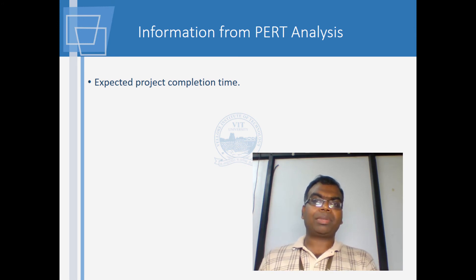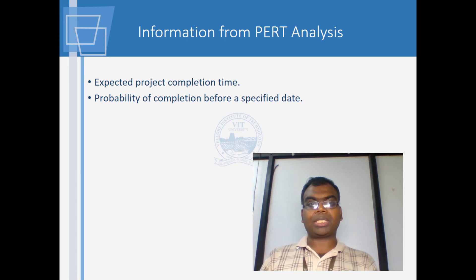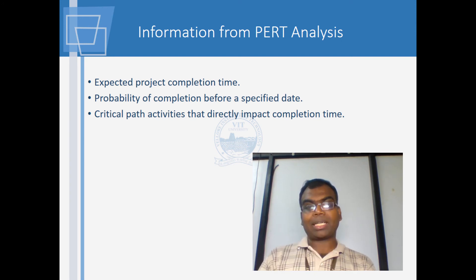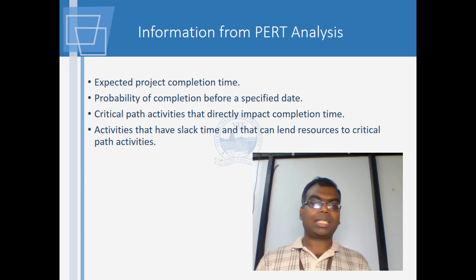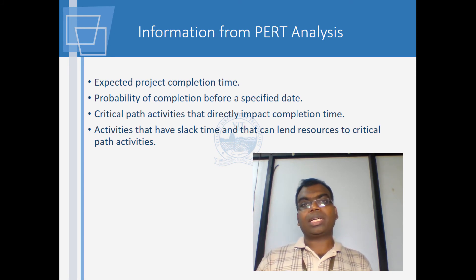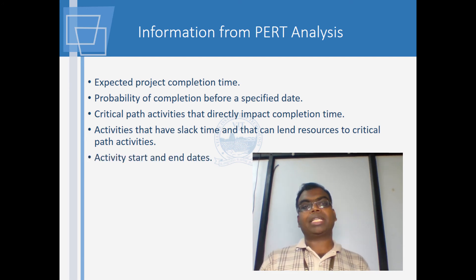From PERT analysis we get the following information: expected project completion time, probability of completion before a specified date, and which critical path activities directly impact completion time. Activities that have slack time can lend resources to reduce stress on the critical path. However, we should be careful that non-critical paths are not made critical because focus has been shifted away from them.